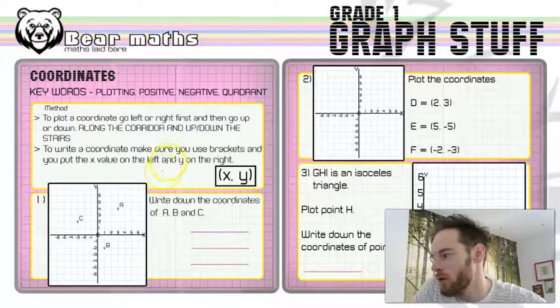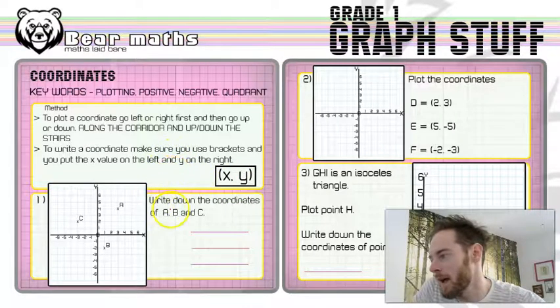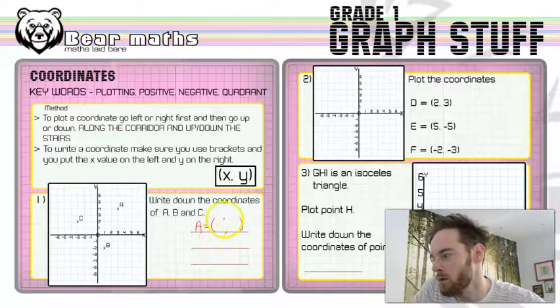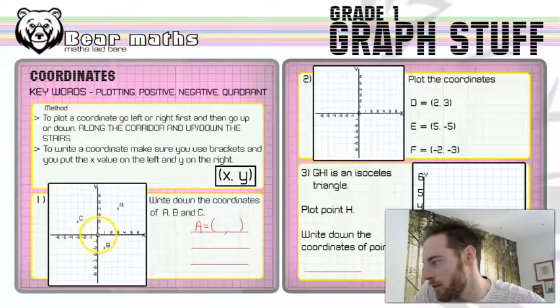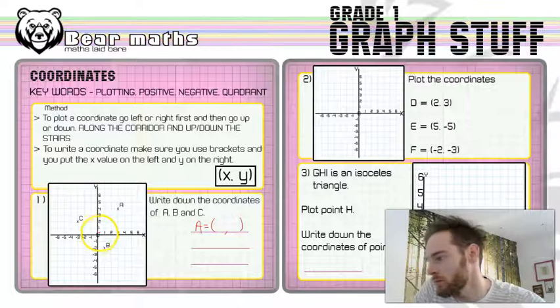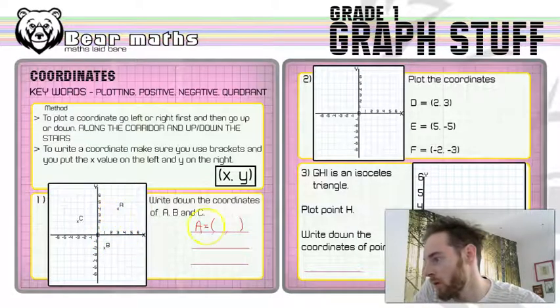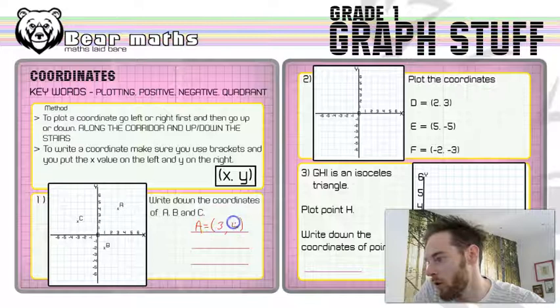In question one we've got to write down the coordinates of a, b and c. So I'm going to write down the letter a equals. Open up the bracket that the coordinates go in. Put a little comma in the middle. I'm just going to go from zero or from the origin is what that point is called. We're going to move over three to the right and we're going to go up four. So that would be three four for that coordinate.